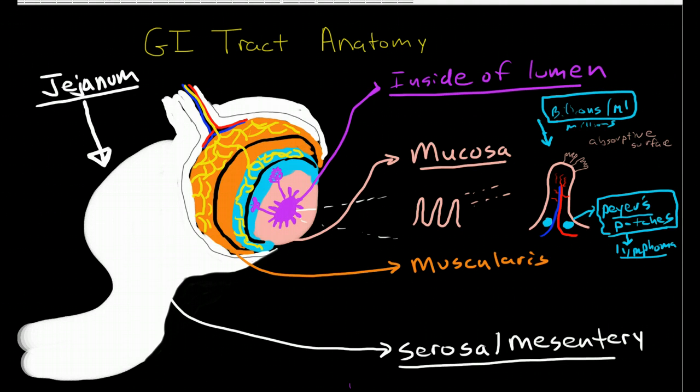So we have absorptive enterocytes, then we have goblet cells interspersed within here. Goblet cells are called goblet cells because they're roughly shaped like goblets, and goblet cells secrete enzymes and mucus.